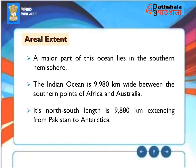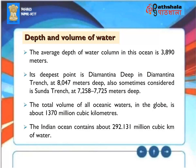The Indian Ocean is 9,980 kilometers wide between the southern points of Africa and Australia. Its north-south length is 9,880 kilometers, extending from Pakistan to Antarctica. Depth and Volume of Water. The average depth of water column in this ocean is 3,890 meters. Its deepest point is Diamantina Deep in Diamantina Trench, at 8,047 meters deep. Also sometimes considered is Sunda Trench, at 7,258 to 7,725 meters deep. The total volume of all oceanic waters in the globe is about 1,370 million cubic kilometers. The Indian Ocean contains about 292.131 million cubic kilometers of water.